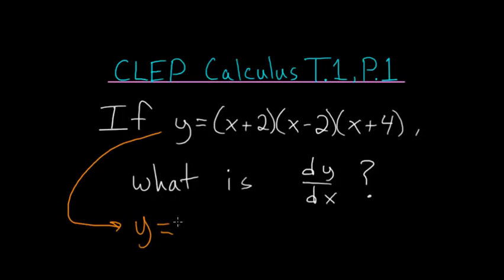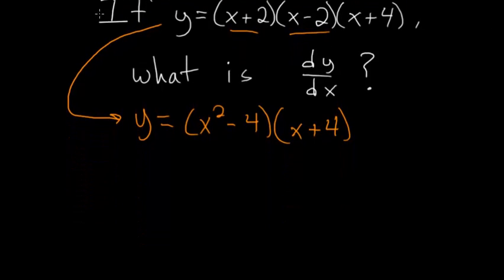So y is equal to, notice that x plus 2 times x minus 2 multiplied together give us a difference of two squares, x squared minus 4, and you can check this by foiling out each of these two binomials. This is multiplied by x plus 4, and now we have to foil this expression out.